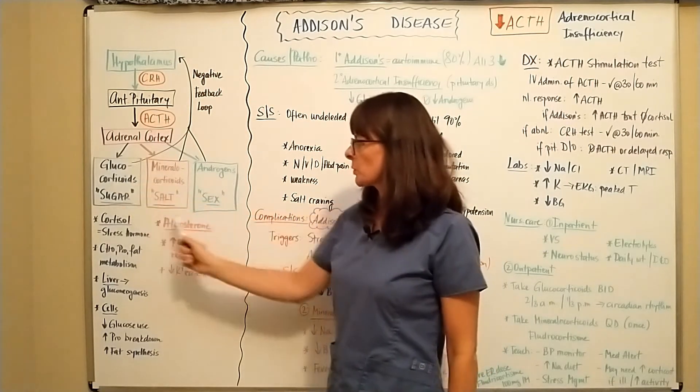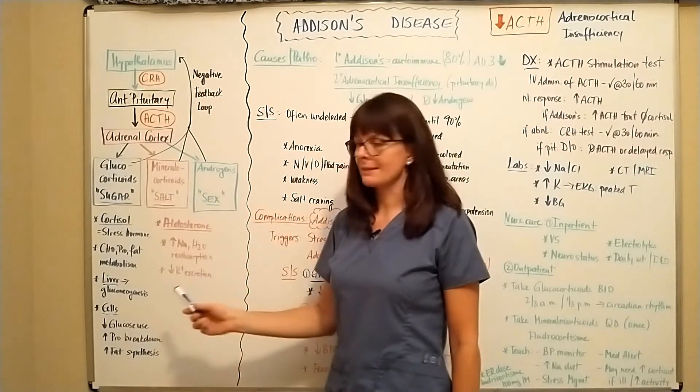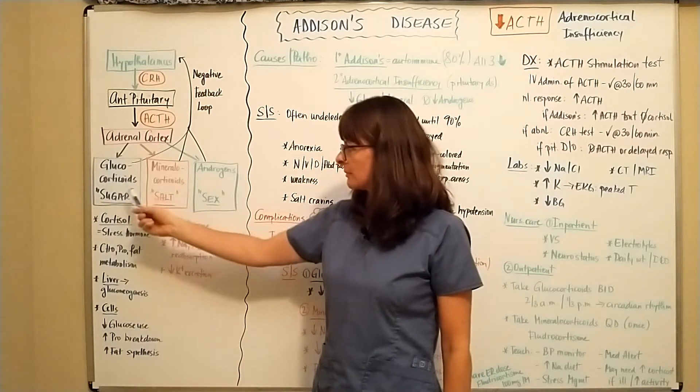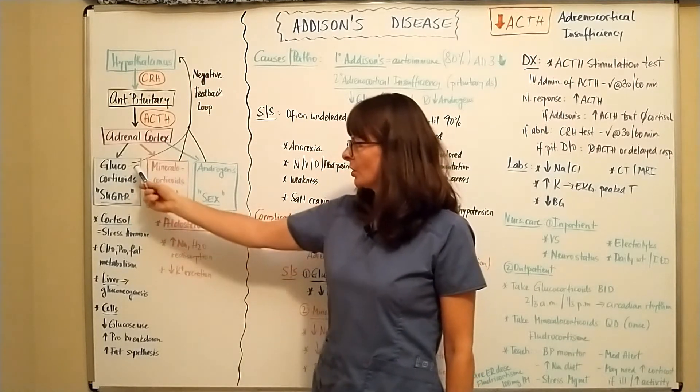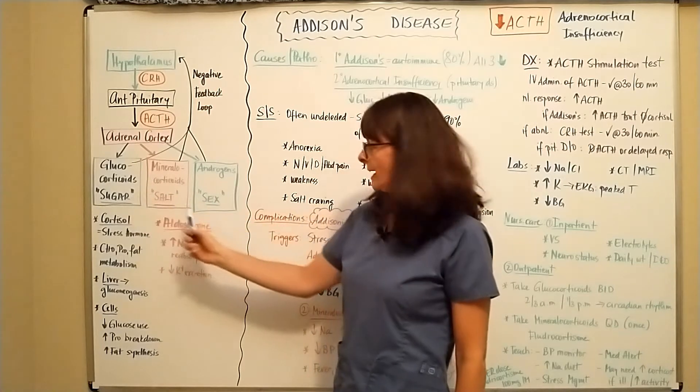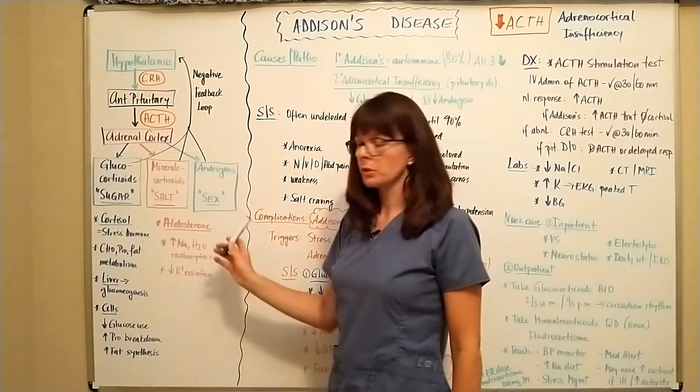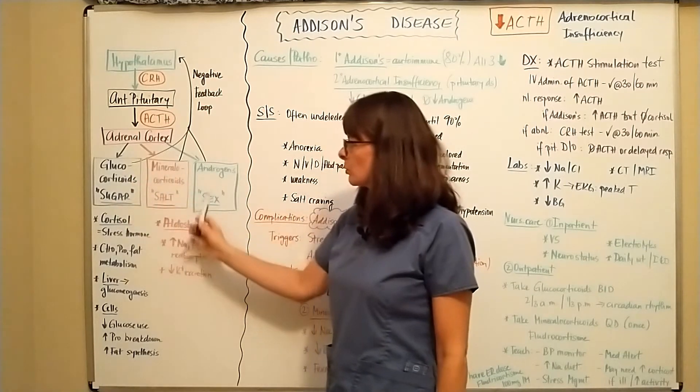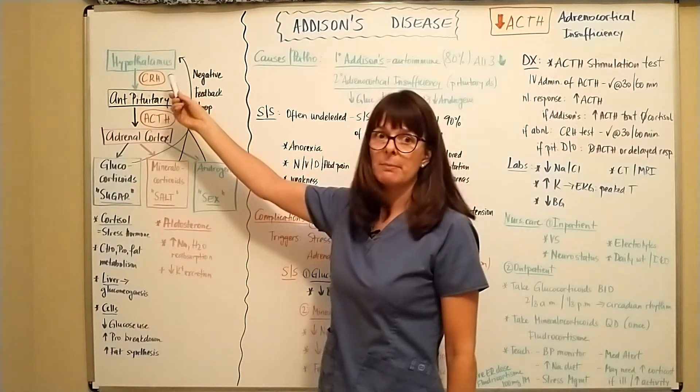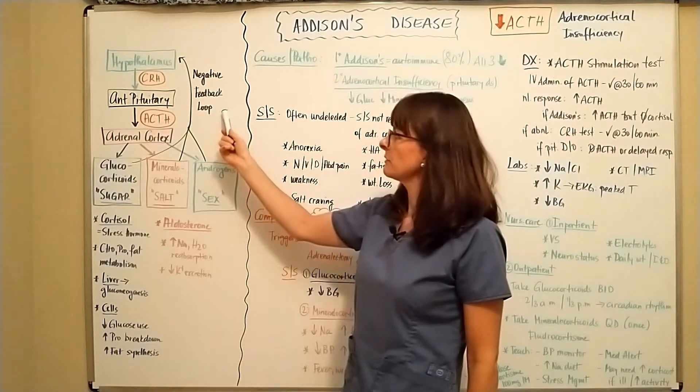And the easiest way to remember these three are the three S's: salt, mineral, glucose, sugar, and sex hormones, androgens. And then in normal circumstances, the level of these will be reported back to the hypothalamus by this negative feedback loop.